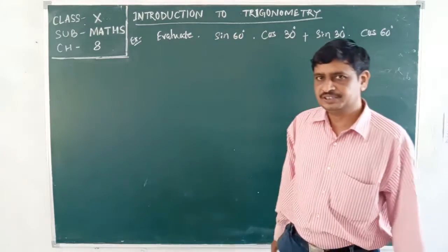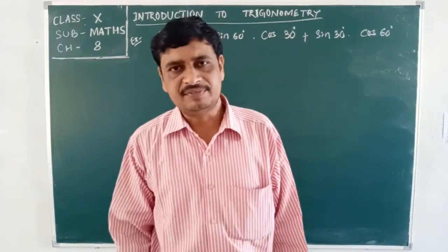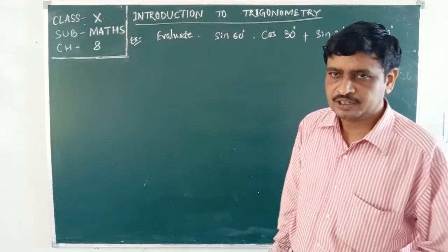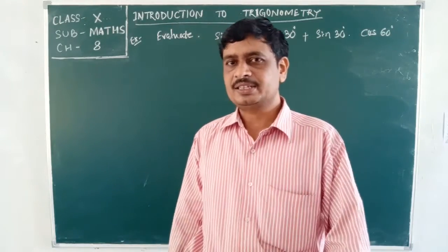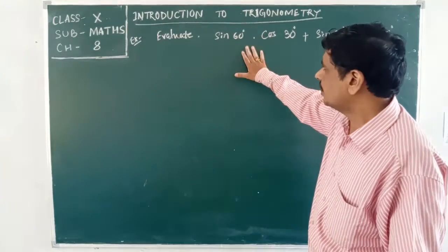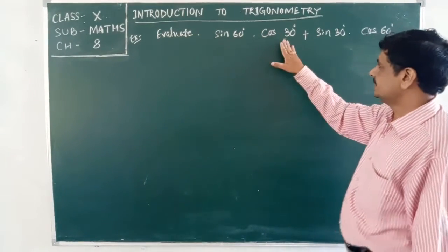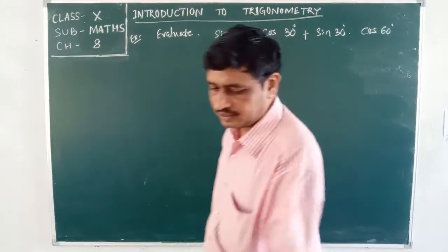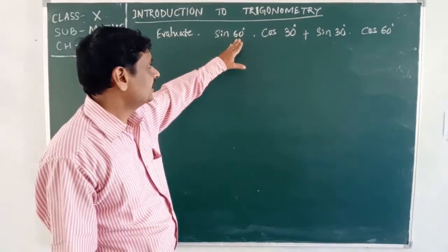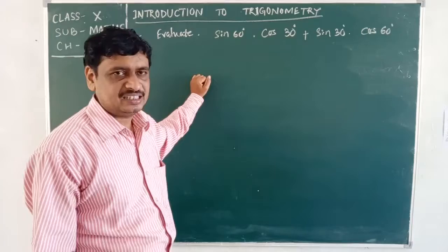Good morning students. Today we will read class 10 mathematics chapter 8, Introduction to Trigonometry. In the previous class we already discussed some specific angles of trigonometric ratios. Today we will discuss how these measures will help in different problems. Here, evaluate sin 60 degrees into cos 30 degrees plus sin 30 degrees into cos 60 degrees.